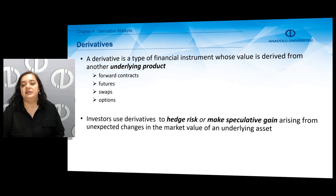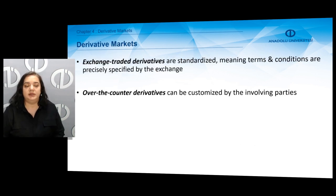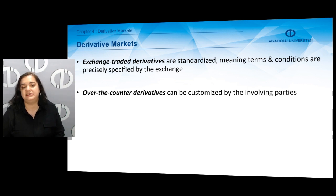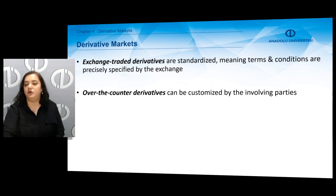Investors use derivatives to hedge risk or make speculative gains that may arise from unexpected changes in the market value of an underlying asset. We can classify derivatives as exchange-traded derivatives or over-the-counter derivatives. Exchange-traded derivatives are standardized contracts, meaning terms and conditions are precisely specified and determined by the exchange, whereas in over-the-counter derivatives, those contracts can be customized by the involving parties.